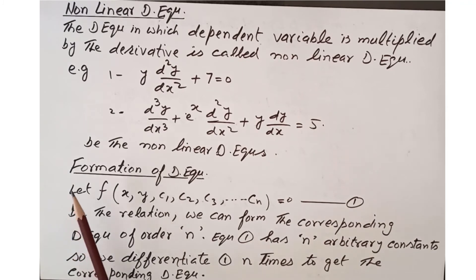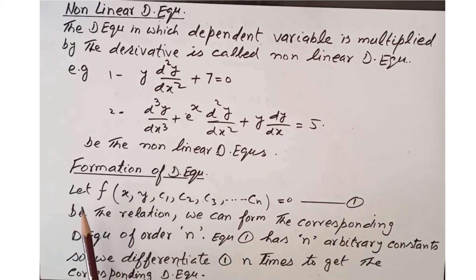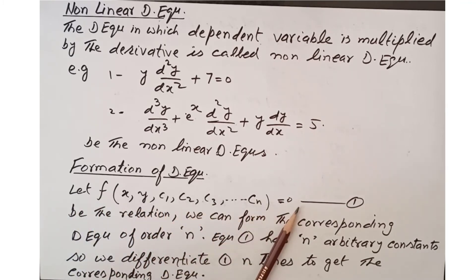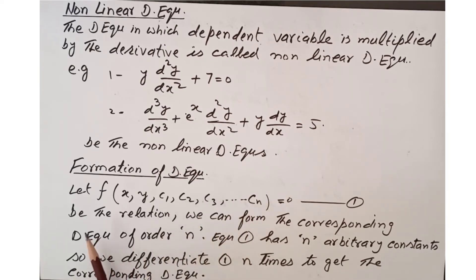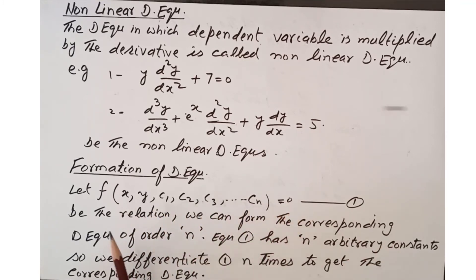Now we look at the formation of differential equations — how they are formed. Consider a general relation f(x, y, c₁, c₂, c₃, ..., cₙ) = 0, where c₁, c₂, ..., cₙ are arbitrary constants. From this relation we can form the corresponding differential equation of order n by differentiating n times.